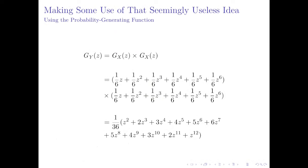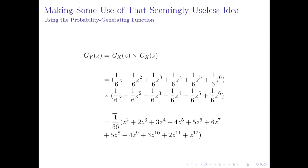We're now going to return to the idea of the probability generating function and define g_y of z. It turns out we can define this as g_x of z times g_x of z. We can do the multiplication — and this is where it's helpful to factor again, keeping the one over 36 factored to make the algebra a bit neater. If we expand it back in, we get that the probability of rolling a two is one over 36, three is two over 36, four is three over 36, up to seven which is six over 36, and back down to 12 which is one over 36 again.